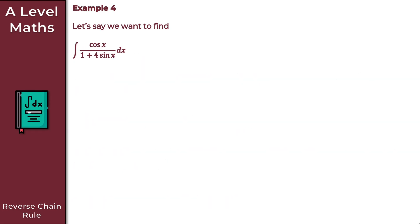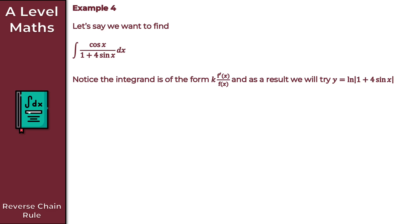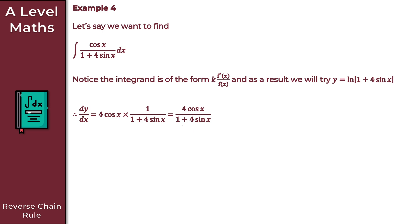For the very last example, we're integrating cos x all over 1 plus 4 sin x with respect to x. We spot that the integrand is of the form k times f prime of x over f of x. As a result, we try y equals ln of our denominator, so ln of 1 plus 4 sin x. Differentiating y with respect to x, by the chain rule dy/dx equals 4 cos x times 1 all over 1 plus 4 sin x, which simplifies to 4 cos x all over 1 plus 4 sin x.